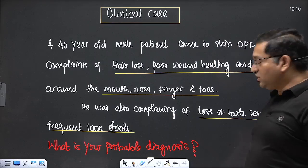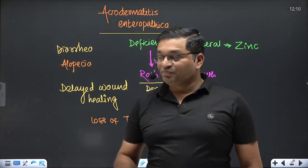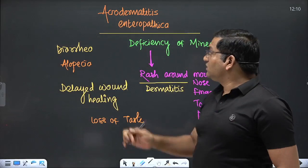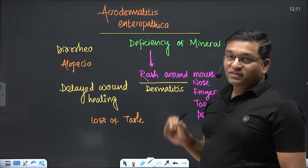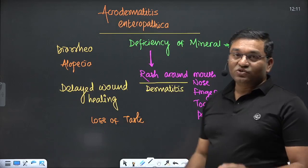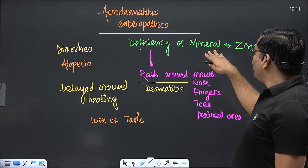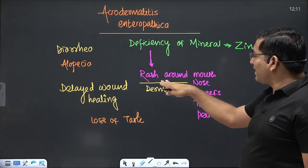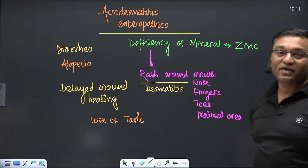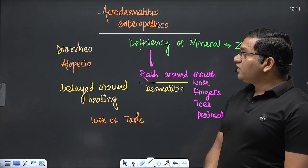The probable diagnosis is acrodermatitis enteropathica, caused by decreased absorption of zinc. 'Acro' means acral parts of the body, 'dermatitis' means skin rash, and 'enteropathica' refers to intestinal absorption. Zinc deficiency causes rash around the acral parts — mouth, nose, fingers, toes, and perineal areas, which are principally involved.